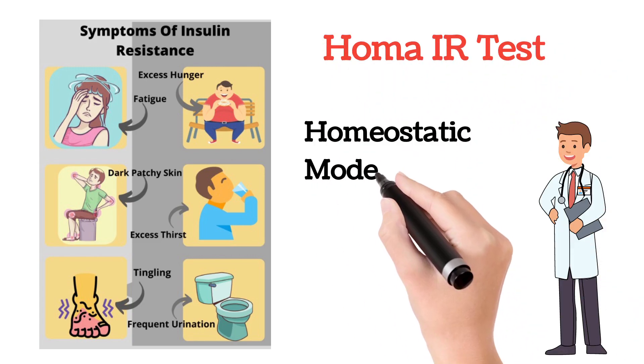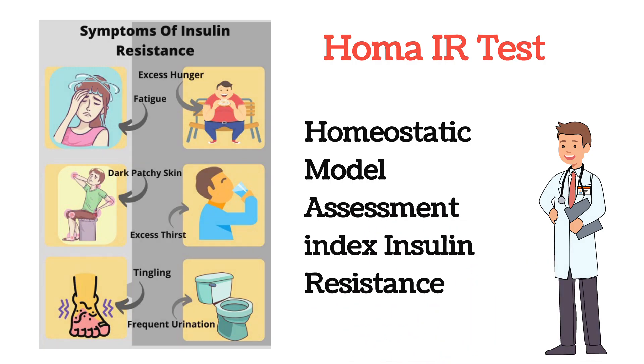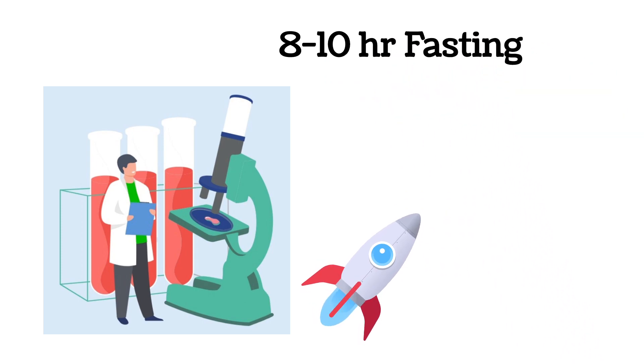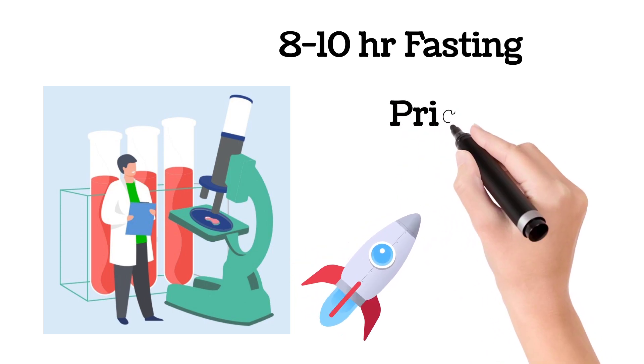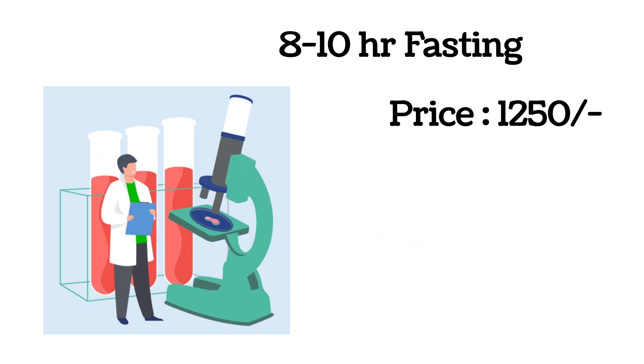It means Homeostatic Model Assessment Index Insulin Resistance test. This test helps determine the blood glucose as well as the insulin level and gives you the HOMA IR index. It is a simple blood test, and we need 8 to 10 hours fasting before getting this test done. The price is approximately 1,250 rupees.